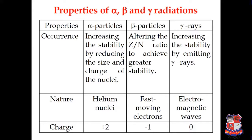Now if we consider the nature of the particles: when alpha particle is emitted, it is nothing but one nucleus of helium being reduced. Beta particle is nothing but the fast moving electron. And gamma rays are nothing but electromagnetic waves. The charge of alpha particle is positive 2, because it is a nucleus of helium. Beta particle has a charge of minus 1, since it is a fast moving electron. And gamma rays have zero charge — that means they are neutral.